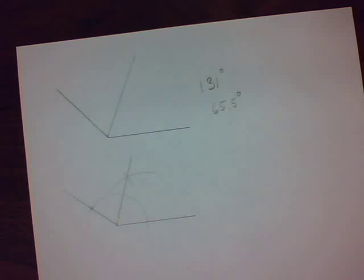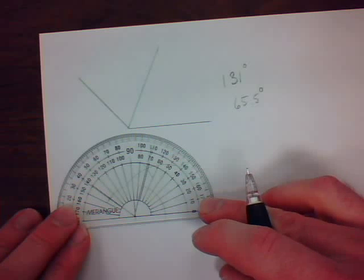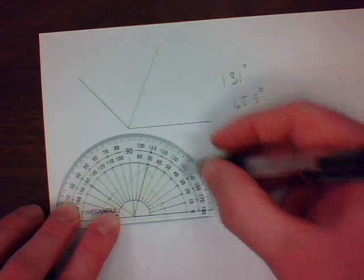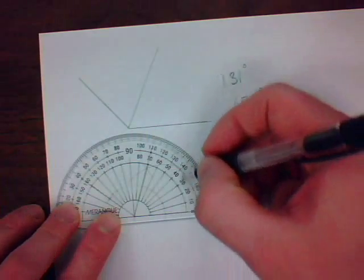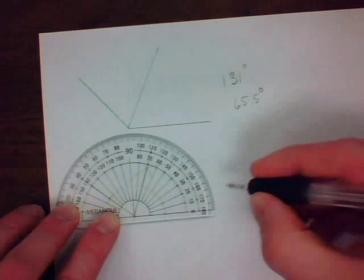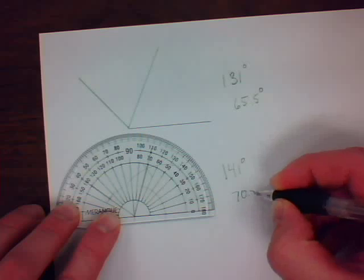And I have bisected that angle. If I were to take my protractor and do my measuring, I'm going to discover, since this is 141 and I'm coming in at 70.5. 141 degrees. Half is 70.5.